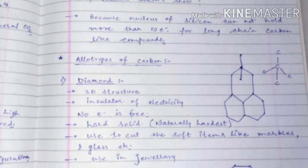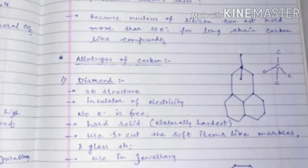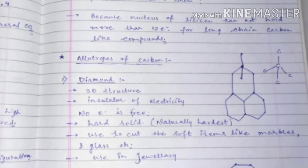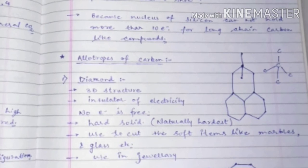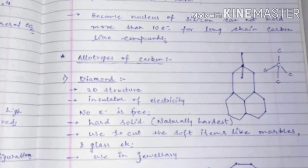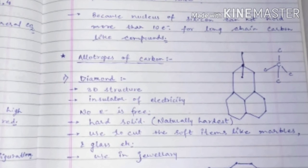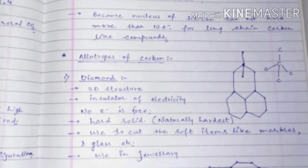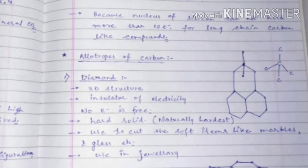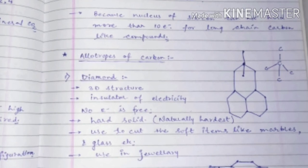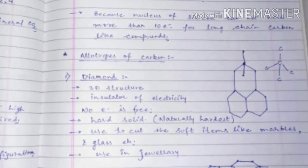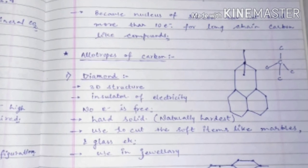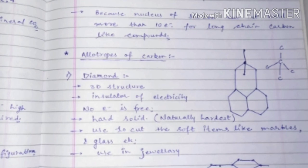Now we will discuss the allotropes of carbon. The first allotrope is diamond. Diamond has a three-dimensional structure and is an insulator of electricity, because all four electrons of each carbon atom in the diamond structure are bonded with four other carbon atoms, so there are no free electrons. Diamond is the hardest naturally occurring substance, and it is mostly used in jewelry and to cut hard materials like marble and glass.